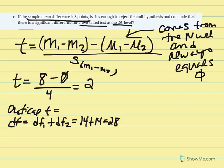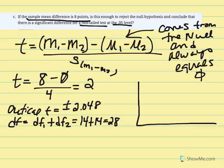Our critical t is equal to 2.048, and now we're going to use that to set our critical region.